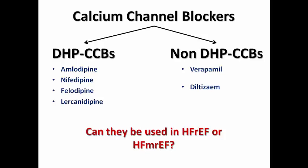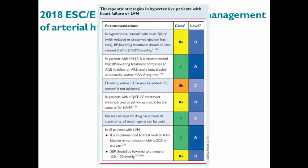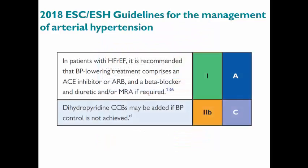What about DHP calcium channel blockers? Can we use them in patients with heart failure with reduced or mid-range ejection fraction for blood pressure control? In the 2018 ESC guidelines for hypertension, there were clear recommendations: Class I indication for ACE inhibitor or angiotensin receptor blocker combined with a beta-blocker and diuretic or mineralocorticoid receptor antagonist — not only for blood pressure but also for mortality benefit. DHP calcium channel blockers carry a Class IIb recommendation if blood pressure cannot be controlled with those medications — so they are not contraindicated, but not the first choice.